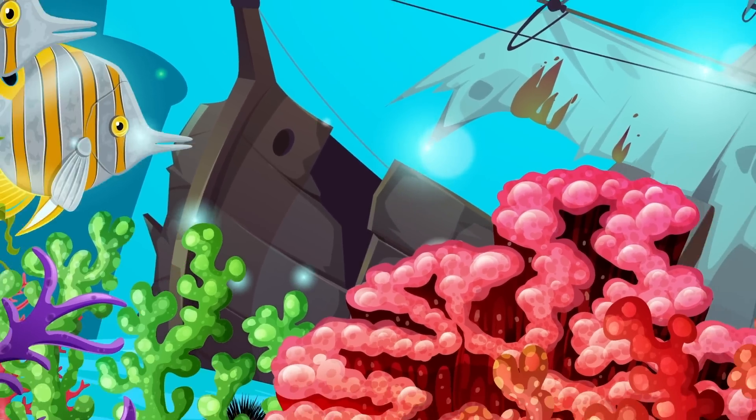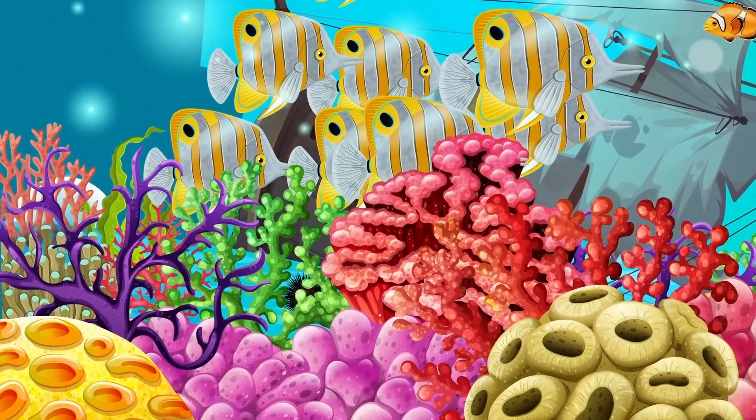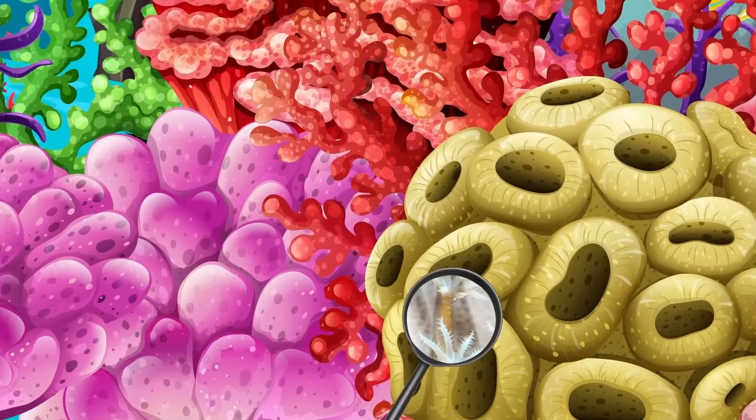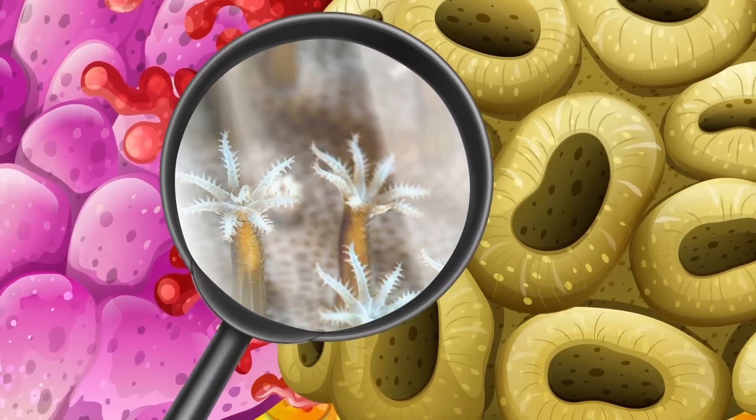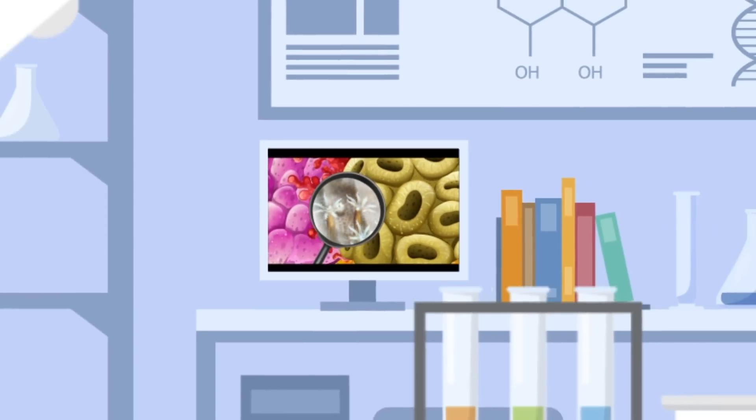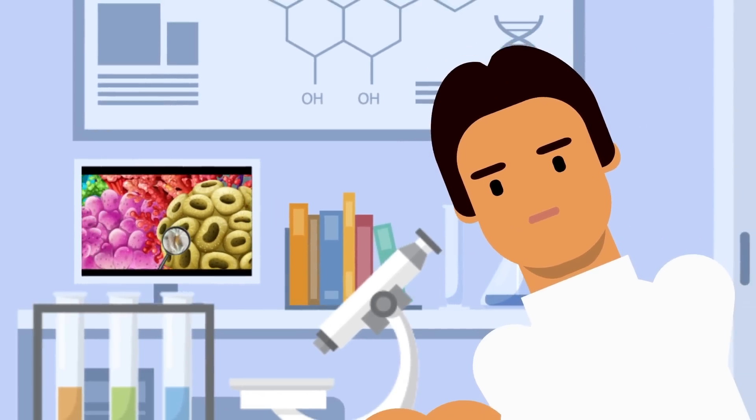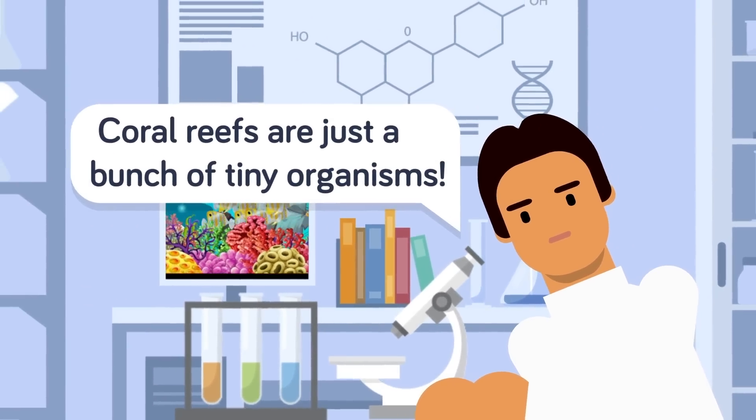But do you know what a coral reef actually is? The answer might surprise you. Corals themselves are actually made up of thousands or hundreds of thousands of tiny organisms called polyps. These little organisms work together by connecting their calcium carbonate exoskeletons to keep them in place. This is what creates the structures we think of as coral.